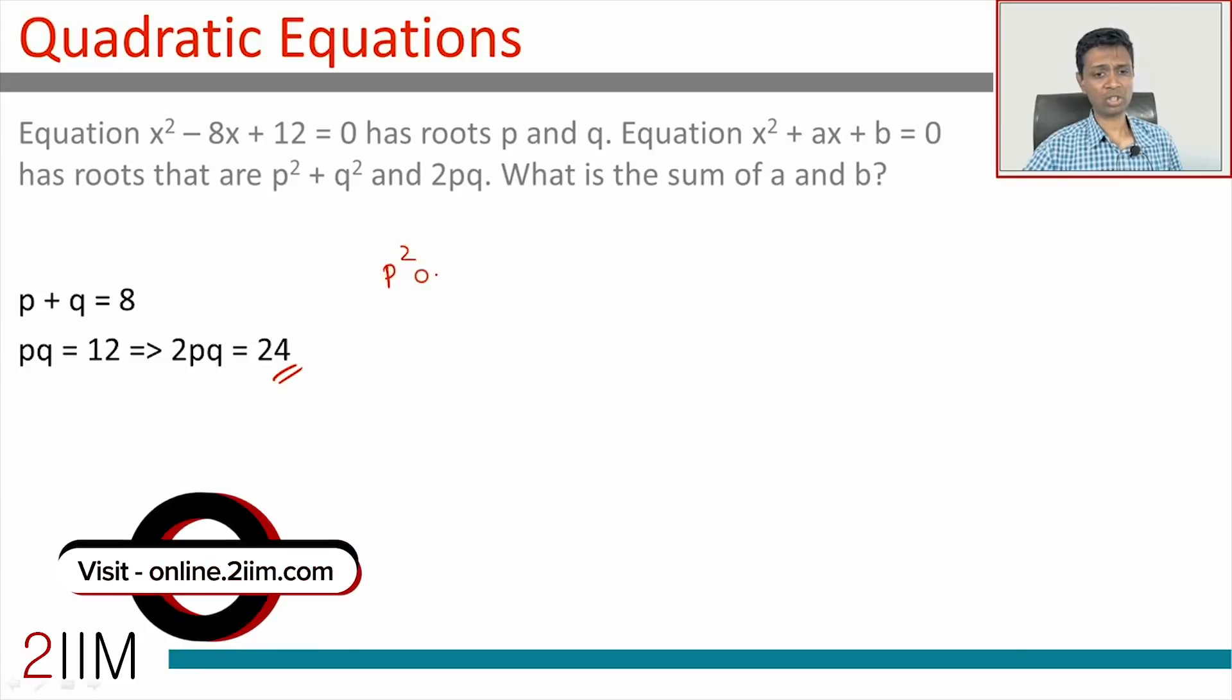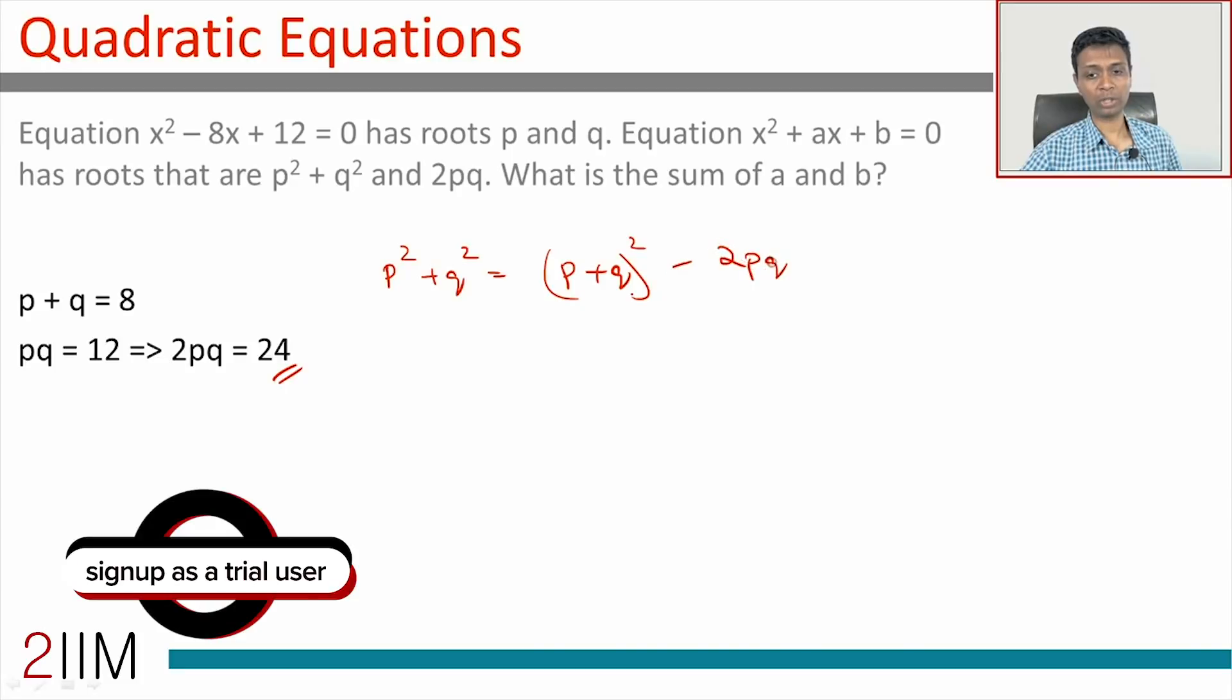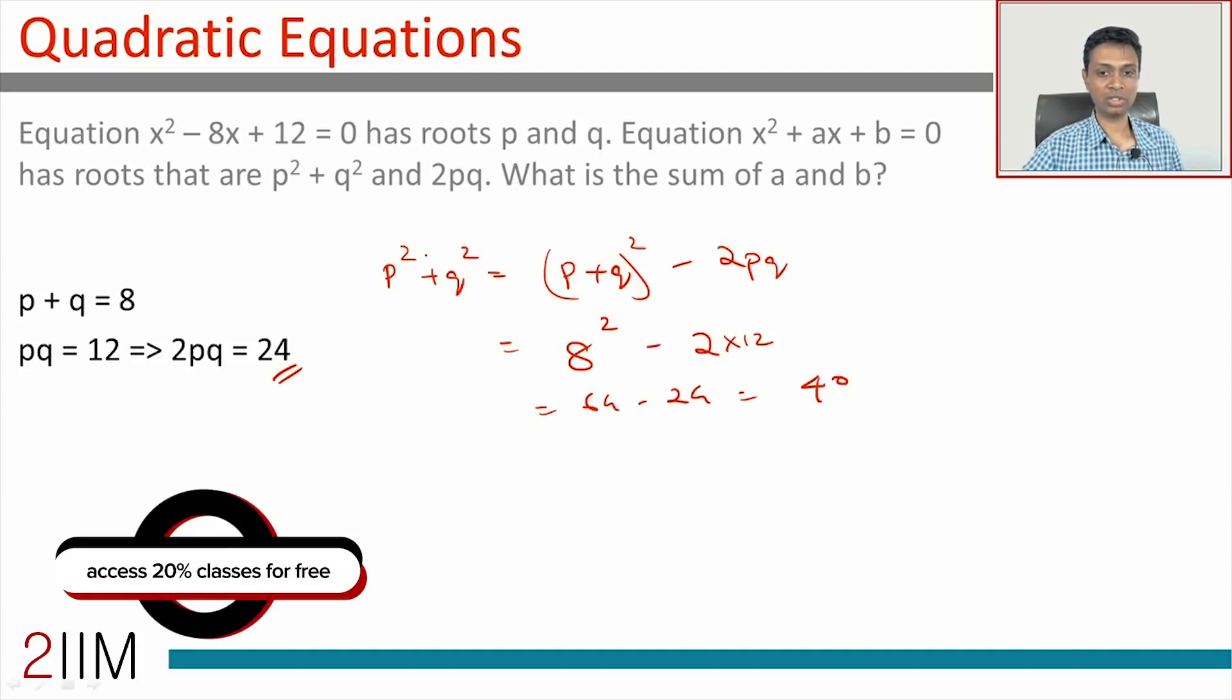p² + q² is (p + q)² - 2pq, which is nothing but 8² - 2 × 12, or this is 64 - 24 which is 40. So the roots of this equation x² + ax + b = 0 are 40 and 24.